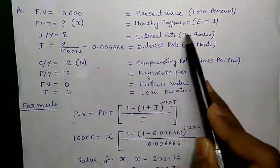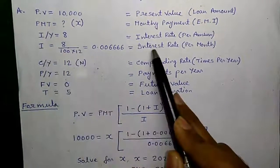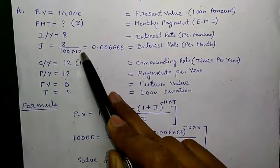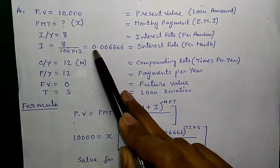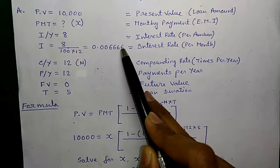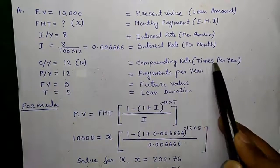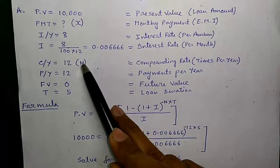I/Y or interest rate per annum is 8%. I or interest rate per month will be 8 divided by 100 divided by 12 to remove percentage and convert to per month, equals 0.006666. C/Y or compounding times per year is 12 since it is monthly compounding. Let's call it N.